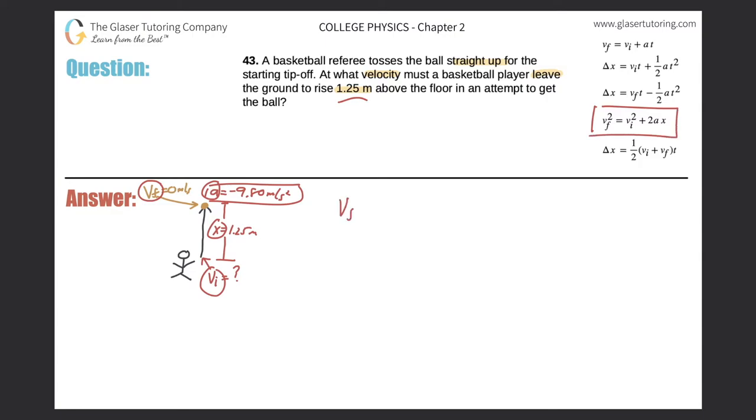Let's write it down. The final velocity squared is equal to the initial velocity squared plus two times the acceleration multiplied by the displacement. Final velocity is zero, so that's zero squared. Initial velocity is what we're looking for. Then it's two times the acceleration, which is negative 9.80, and then the displacement, 1.25 meters.